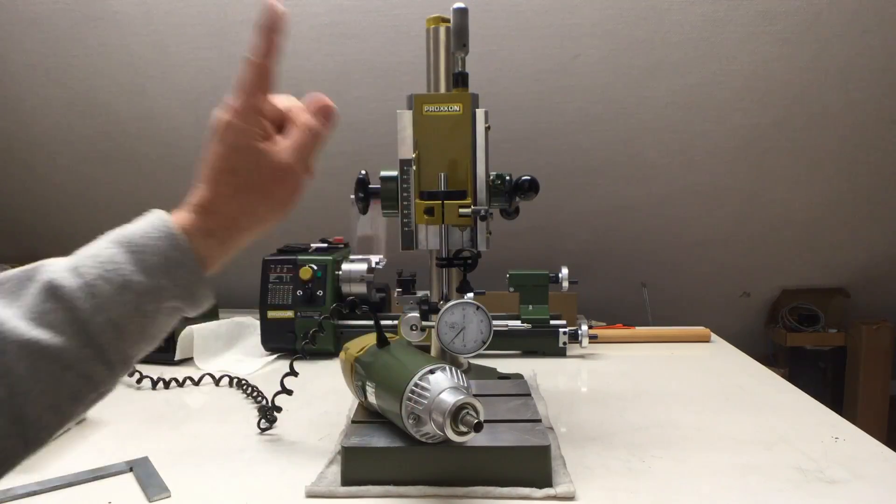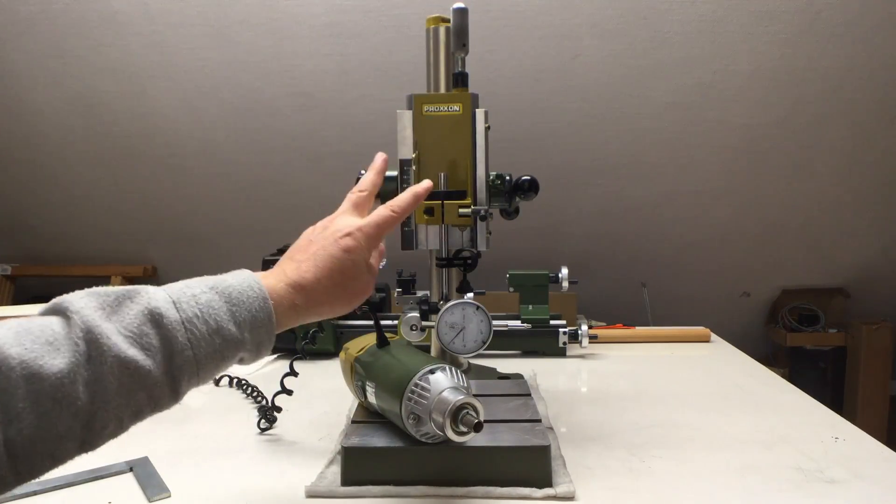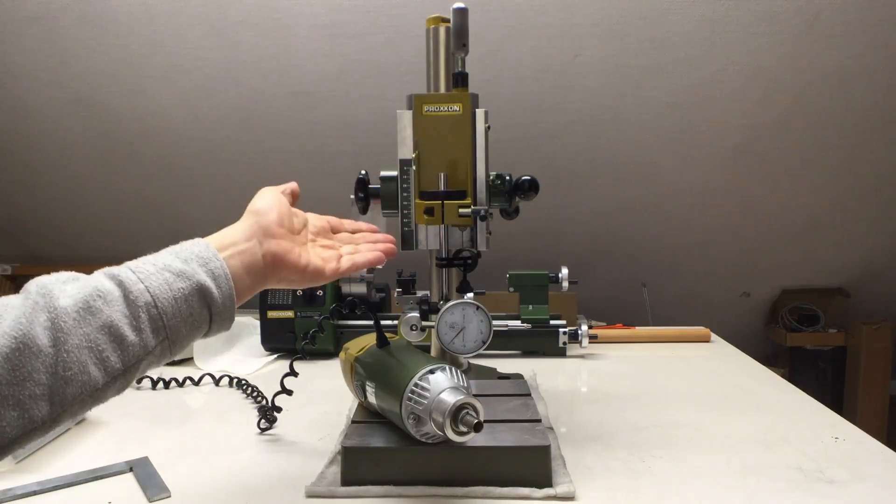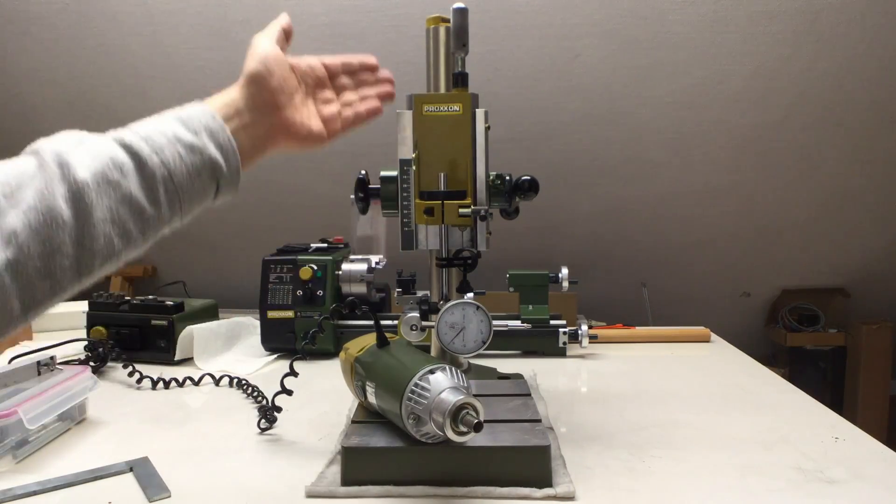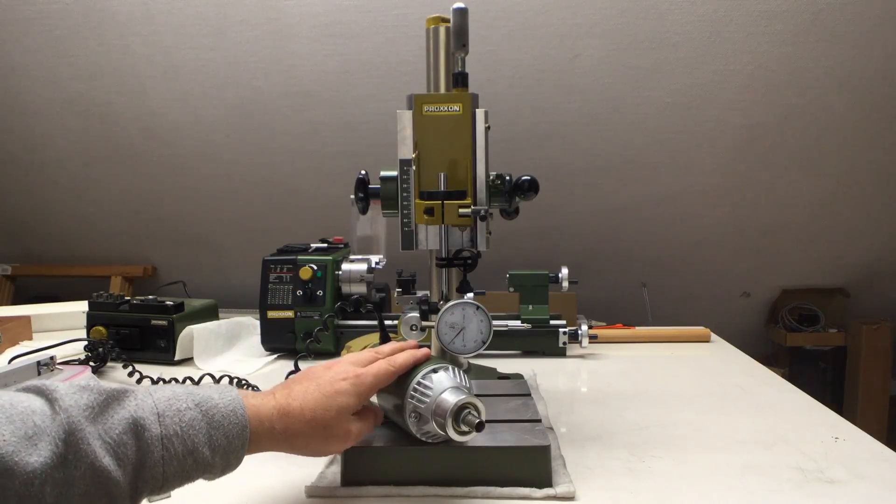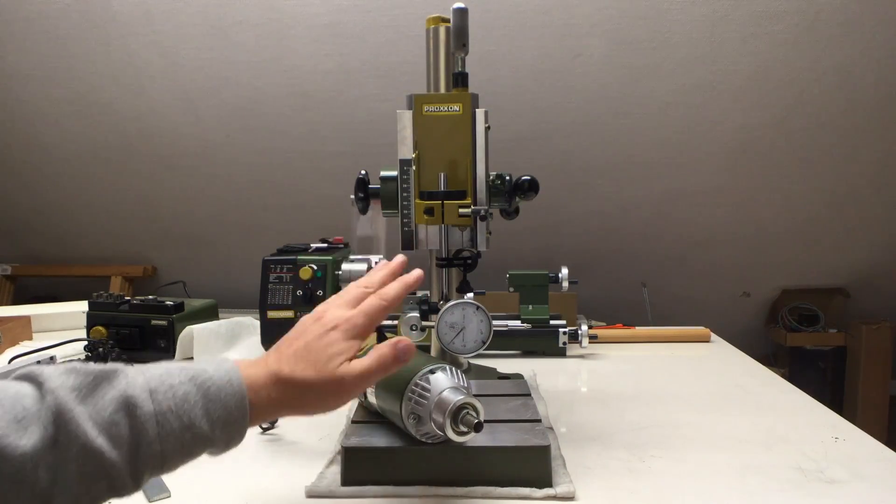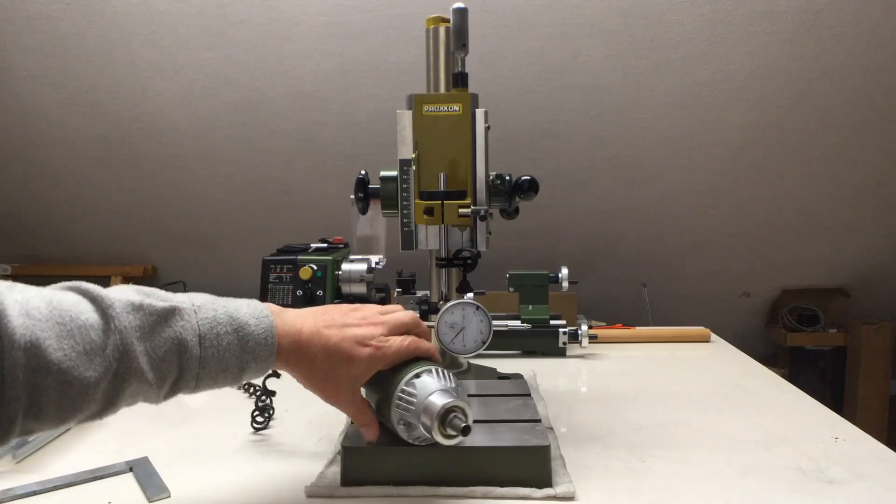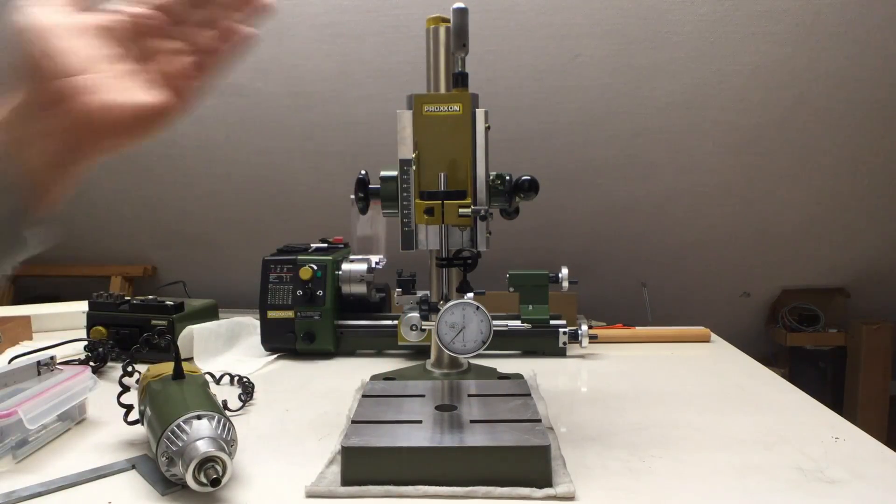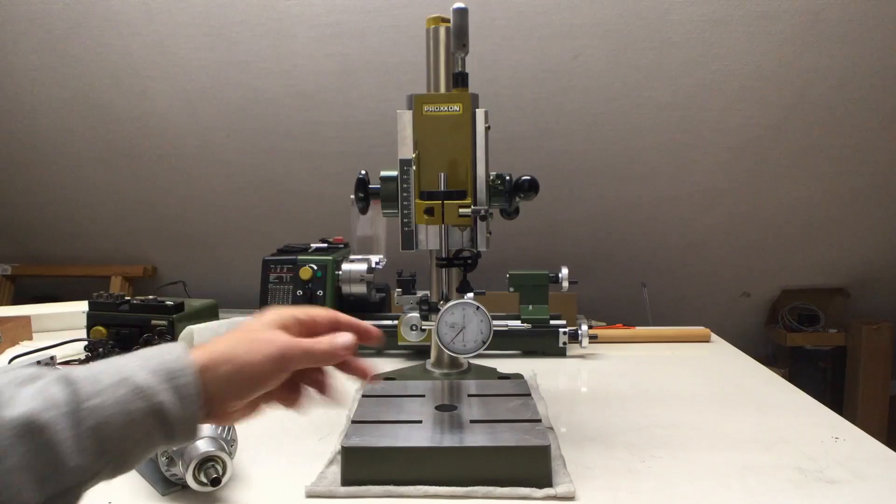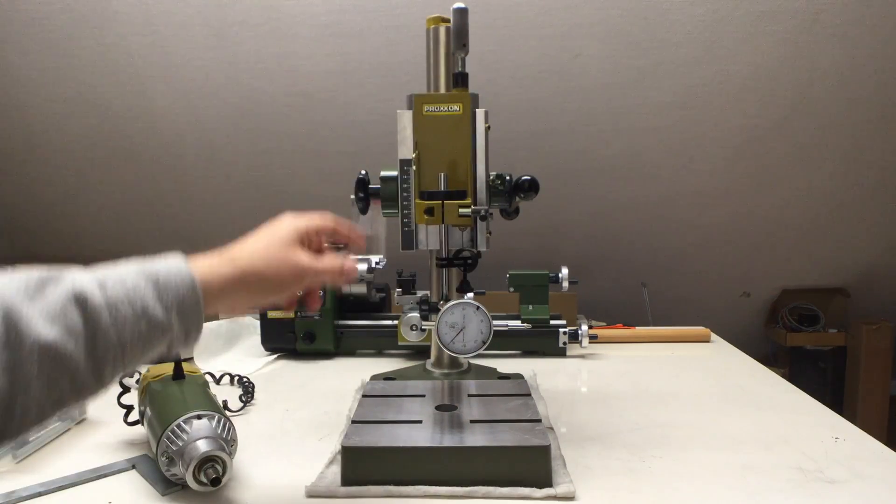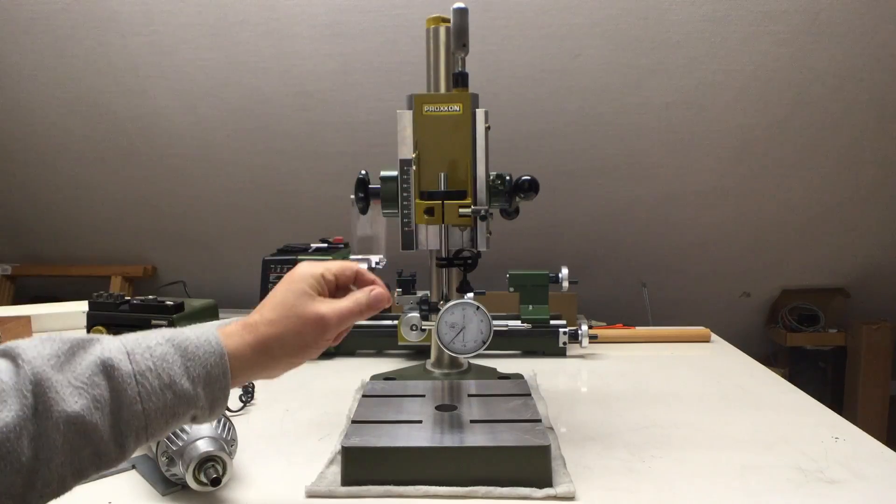Welcome back to the first video of two about tramming my Proxxon BFB2000 drill mill stand and my Proxxon BFW40E spindle. In this first part we will concentrate on the drill mill stand. I already did a video about setting up and aligning the whole stack here, card here, link in the description.